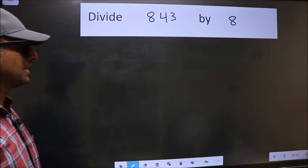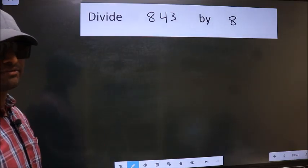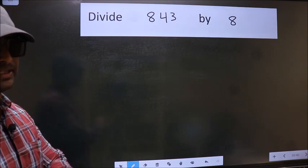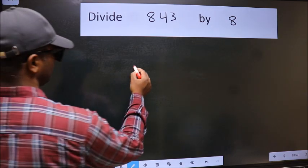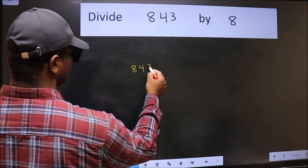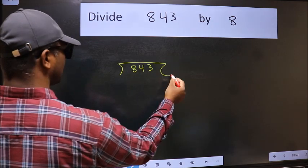Divide 843 by 8. To do this division, we should frame it in this way: 843 here and 8 here.